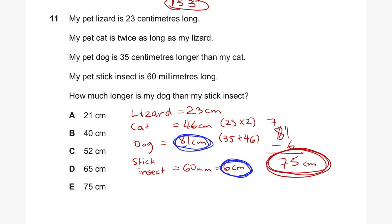The key thing, boys and girls, is knowing that as soon as you see the phrase 'how much longer,' you need to subtract straight away, because it's asking for the difference between the two amounts. That's why the answer to question 11 is E.